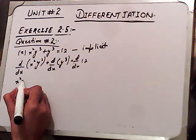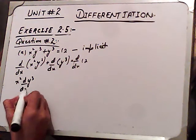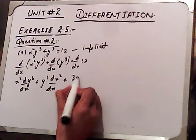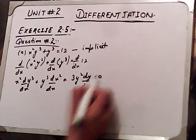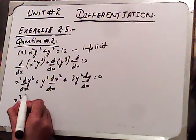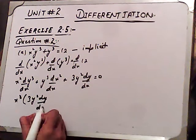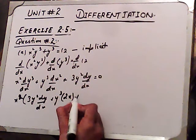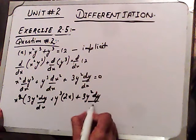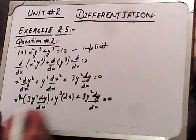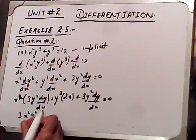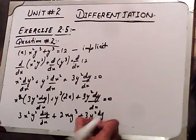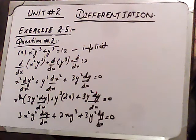Differentiating using the product rule and chain rule: dy/dx will use the fact that the derivative of the constant is 0. We get x squared times 3y squared dy/dx plus y cubed times 2x plus 3y squared dy/dx equals 0. Now if we take dy/dx common, we collect those terms.